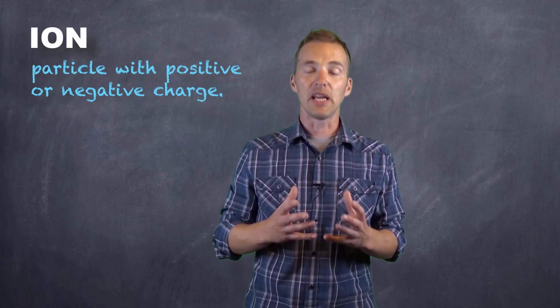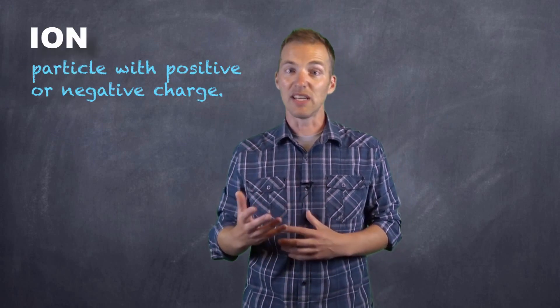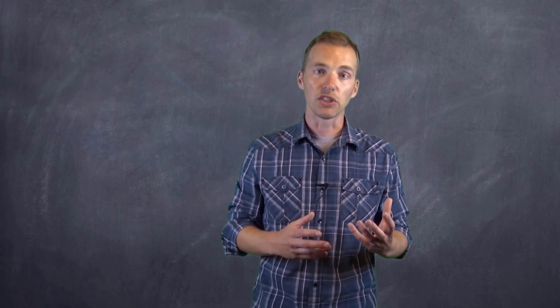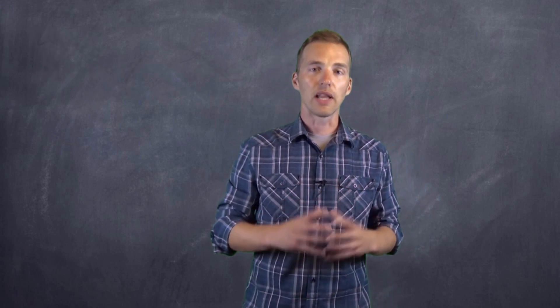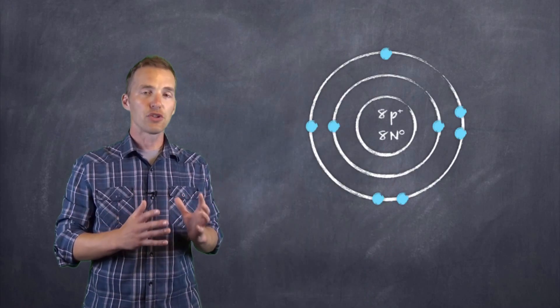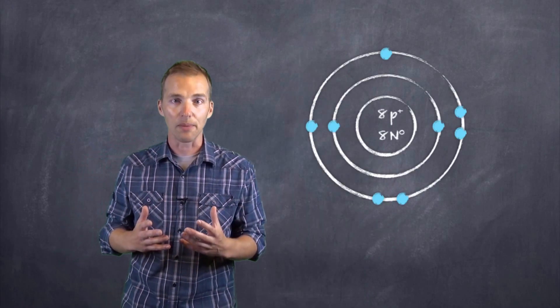Now if this were a charged particle, which we refer to as an ion, there would be a greater or lesser number of electrons, depending on whether it was a negatively charged ion or a positively charged ion. But for the time being, we're just going to work with neutral elements. Now this is a fully constructed Bohr-Rutherford diagram for an oxygen atom.